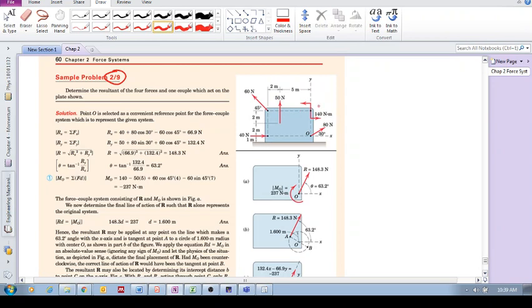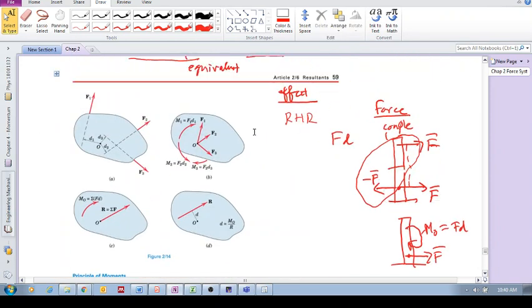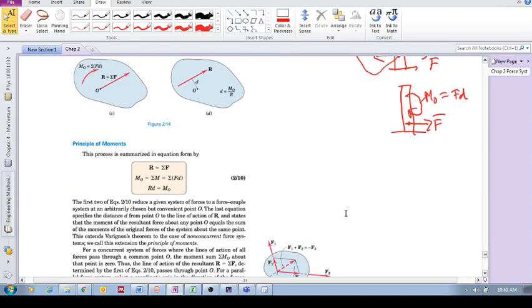Make sure that you know that when you see this, this refers to a couple acting on the body. So we've got a force here, force there, force there, a couple which gives us a couple moment, and we have a force. So it says determine the resultant of the four forces and one couple which acts on the plate shown. We select point O as a convenient location. First step is we take all those forces, put it at a certain point, and we get the resultant force acting at that point.